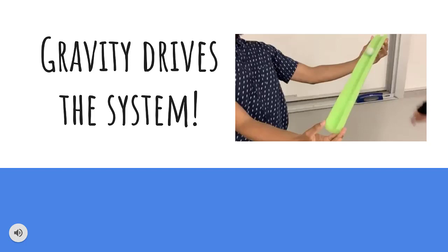Gravity is an invisible force that pulls an object toward the center of the Earth. An object with weight has gravity. That is why water is able to travel downwards on a slope — because the water, with its weight, is trying to get to the lowest surface of the Earth where there are no barriers preventing it from traveling.